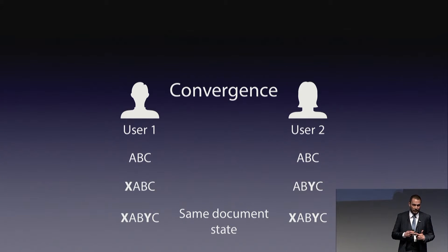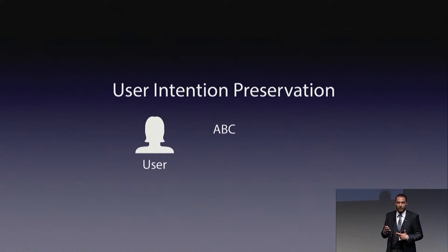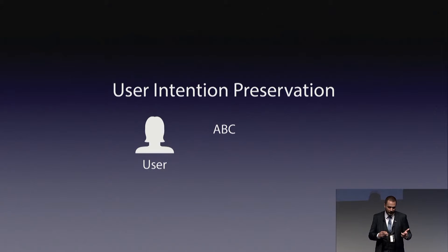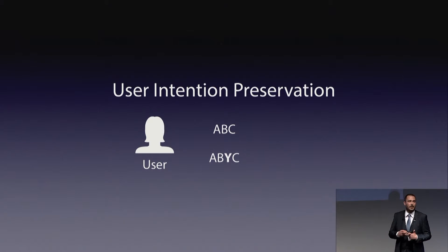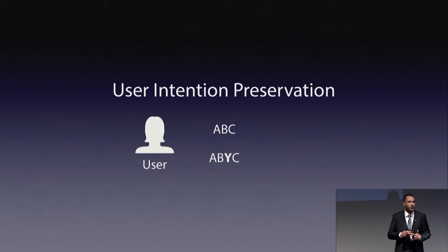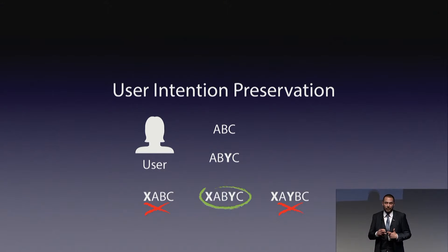Now what is user intention preservation? Let's take another example with the same piece of text A, B, C, and a user who wants to put a Y between B and C.